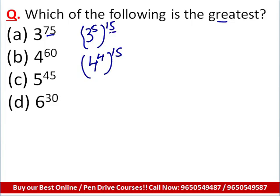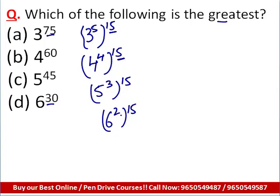The outer power is being kept the same at 15 throughout. So 5 raised to power 45 is written as (5 cubed) raised to power 15, since 45 is 3 × 15. Similarly, the power 30 is written as 2 × 15, so 6 raised to power 30 becomes (6 squared) raised to power 15. As you can see, in all these expressions the outer power is the same — I've kept them the same so that I can compare the terms easily.